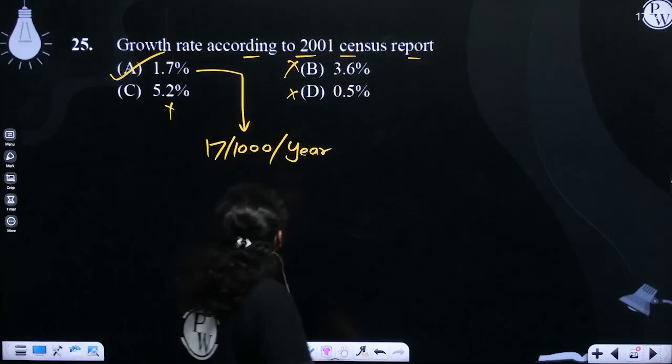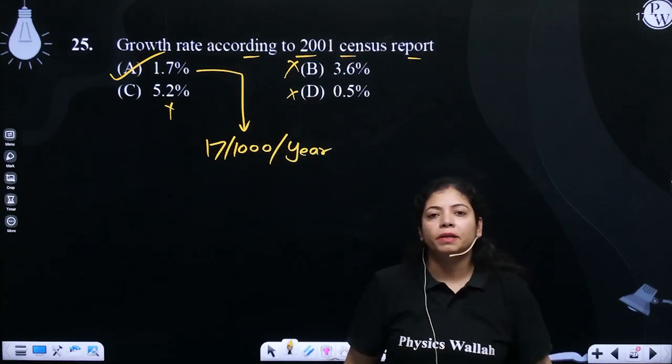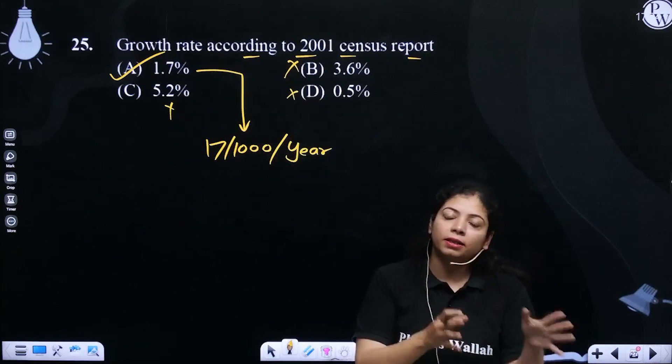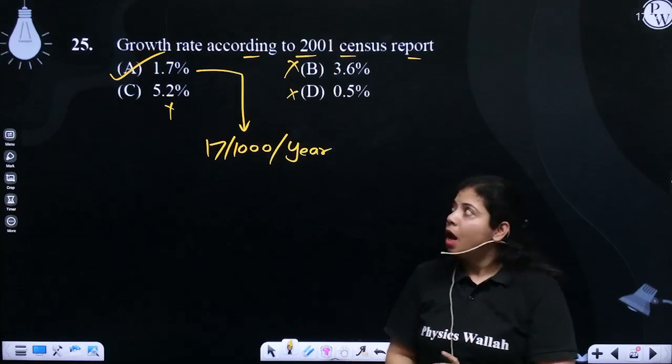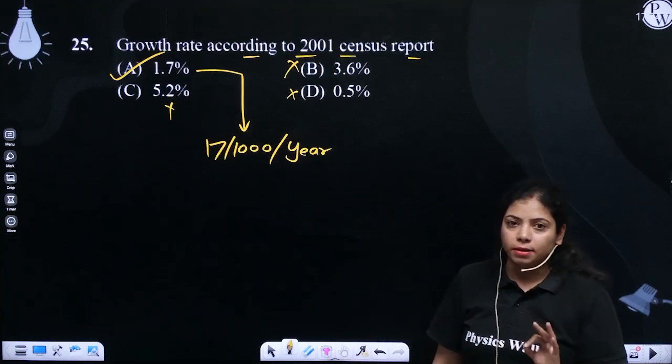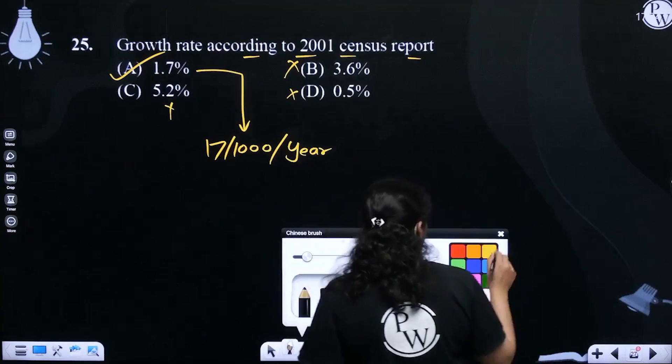This is the growth rate according to 2001 census report. So, here we have not done anything, easy question, remembering category.